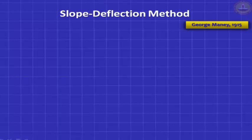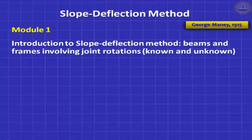Today we look at the slope deflection method. It is very old. We are speaking in the year 2015, and this method was discovered in 1915 — exactly 100 years ago — by someone called George Maney. We will be doing 3 modules, 2 hours each. Today's module, module 1, will deal with an introduction. We begin slowly, dealing with only unknown joint rotations.